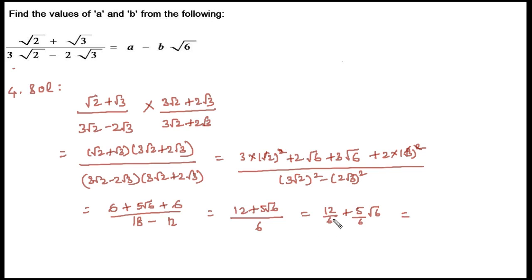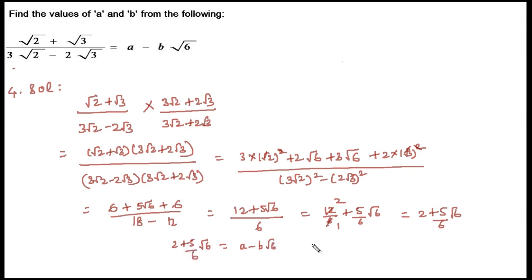This equals (12 + 5√6) / 6, which we can write as 12/6 + (5/6)√6 = 2 + (5/6)√6. Now let's compare the left-hand side with the right-hand side, which is A + B√6. We can write this as 2 − (−5/6)√6. Therefore A = 2 and B = −5/6.